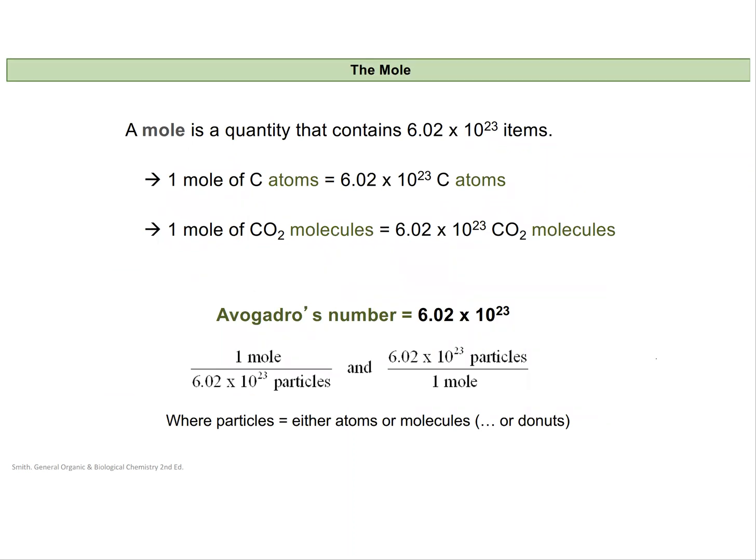And so this word mole is really just a counting number or a quantity that represents this large number right here. We actually call this number Avogadro's number 6.02 times 10 to the 23rd. And so we can use it in a lot of ways. Since it's just representing a number we can have a mole of anything. We can have a mole of atoms. So if I have a mole of carbon atoms it's 6.02 times 10 to the 23rd atoms. But if I have a mole of carbon dioxide molecules I have 6.02 times 10 to the 23rd molecules. Or if I have a mole of donuts I have 6.02 times 10 to the 23rd donuts.